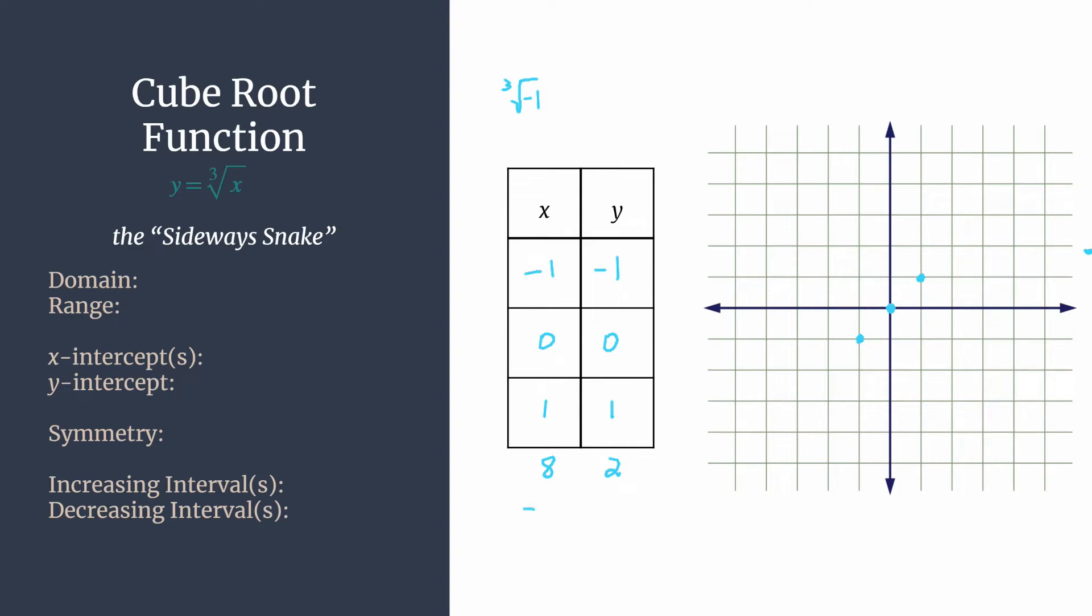If you needed another point, you could do the cube root of negative eight, which would just be negative two. Okay, and you would know that that one would be all the way over here somewhere, further confirming that we have a sideways snake here.